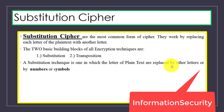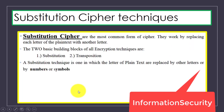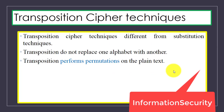In substitution cipher, letters of the plain text are replaced by other letters, numbers, or symbols. Transposition cipher is different from substitution cipher — in transposition cipher, they do not replace one alphabet with another; instead, they perform permutations on the plain text.